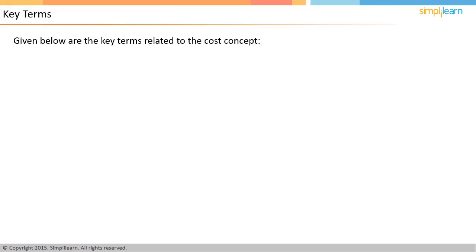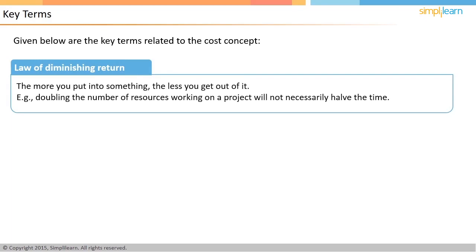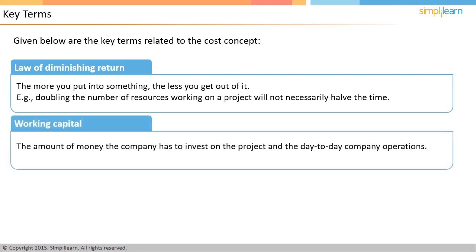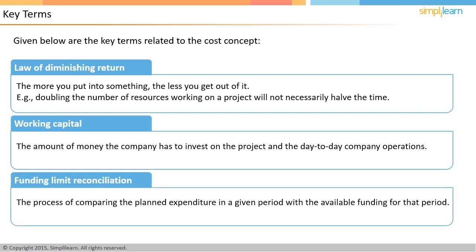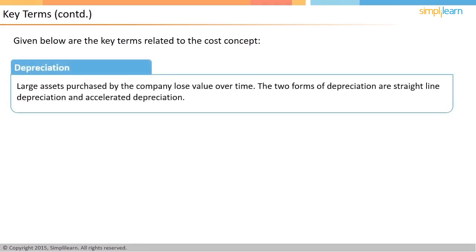Additional PMP exam definitions include: the law of diminishing returns — the more you put into something, the less you get out; for example, doubling resources will not necessarily halve the time. Working capital is the amount of money a company has to invest in the project and day-to-day operations. Funding limit reconciliation is the process of comparing planned expenditure in a given period with the available funding for that period.